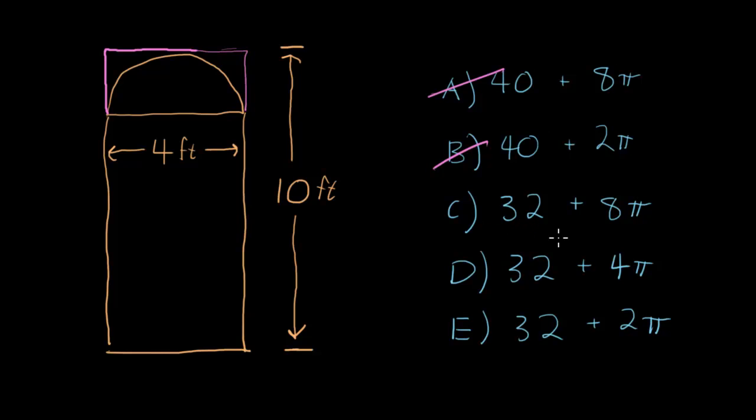C, we've got 32 plus 8π. Well, π is a little over 3, right? So this is way above 40. This is 32 plus something over 24, so not C.